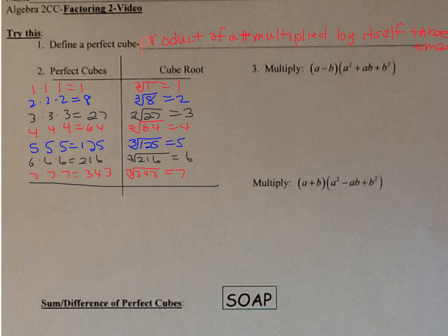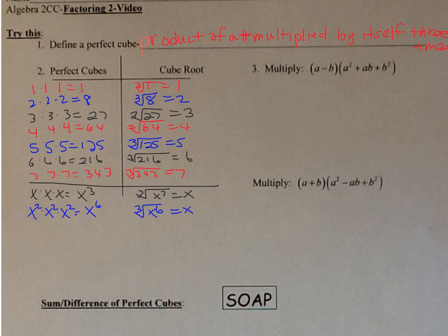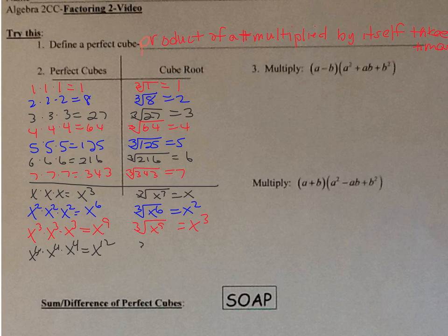Now let's talk about variables. x times x times x — when you multiply, you add the exponents — so that's x to the third. The cube root of x to the third is x. x squared times x squared times x squared is x to the sixth, so the cube root of x to the sixth is x squared. x to the third times x to the third times x to the third is x to the ninth, and the cube root of x to the ninth is x to the third. x to the 4th times x to the 4th times x to the 4th is x to the 12th, so the cube root of x to the 12th is x to the 4th.